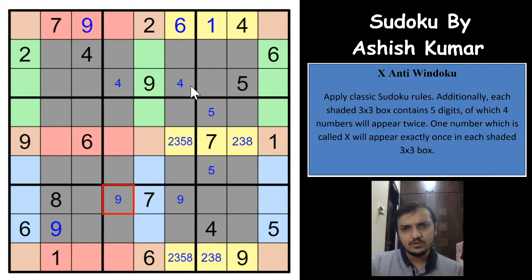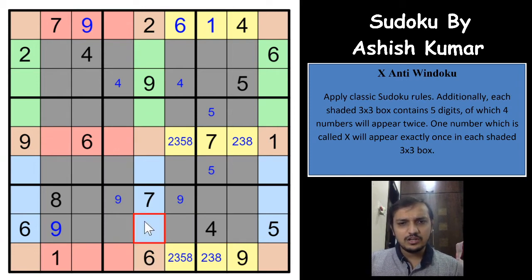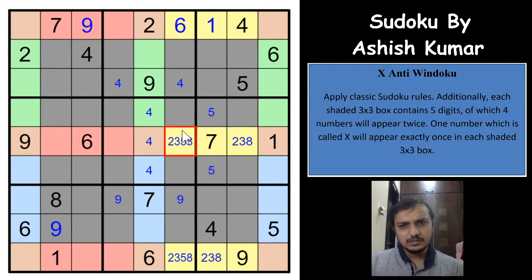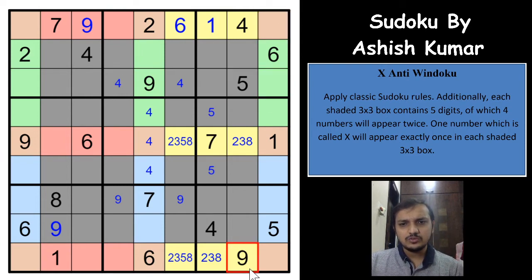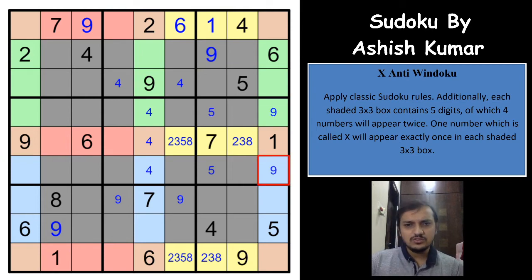Where can 4 come in this column? Because of the 4 here and a 4 here, a 4 has to be in one of these 3 cells in this column, eliminating all other possibilities for 4 from this box. Where can 9 come in the 3rd box? A 9 cannot be here or in these 2 cells, so because of the 9 here, a 9 has to be here. Then 9 has to be in one of these 2 cells by classic means.